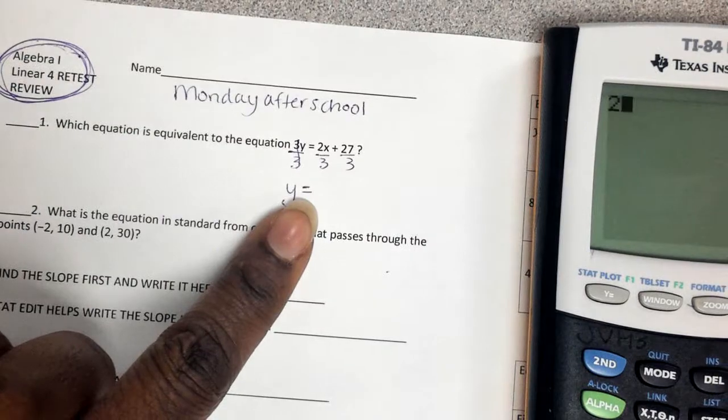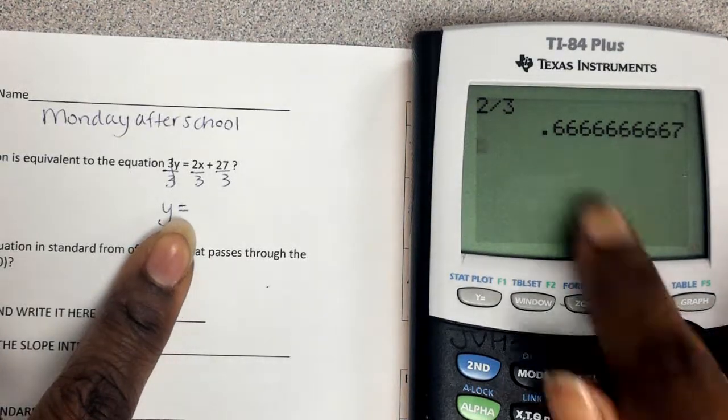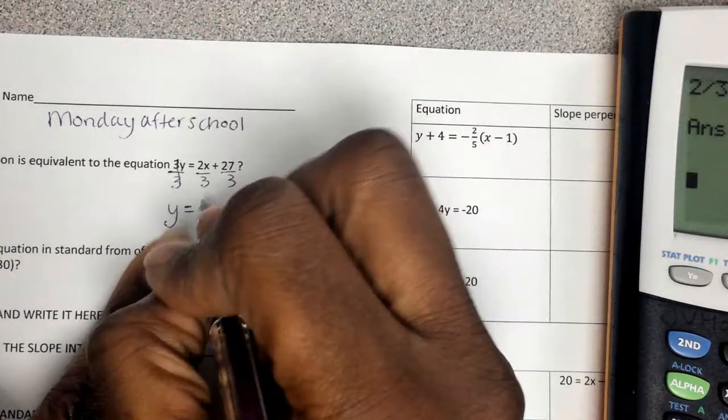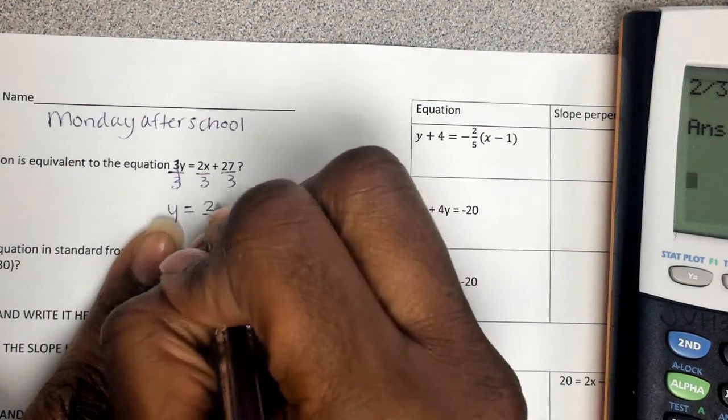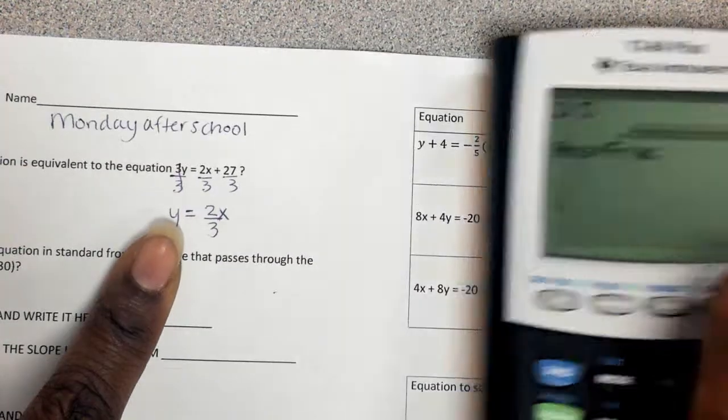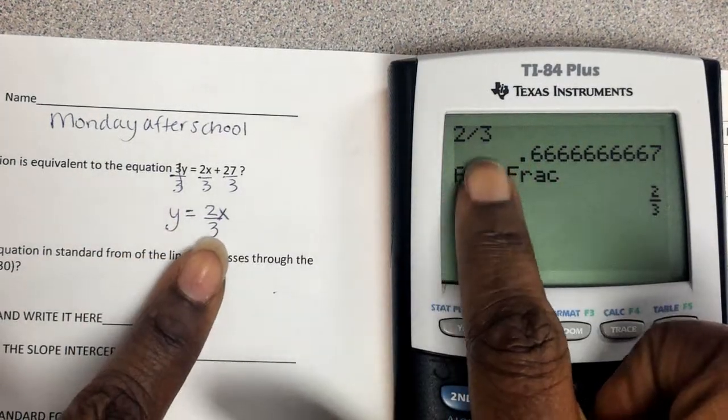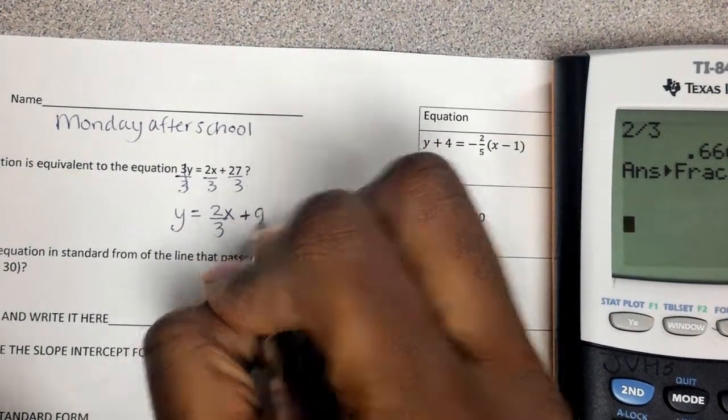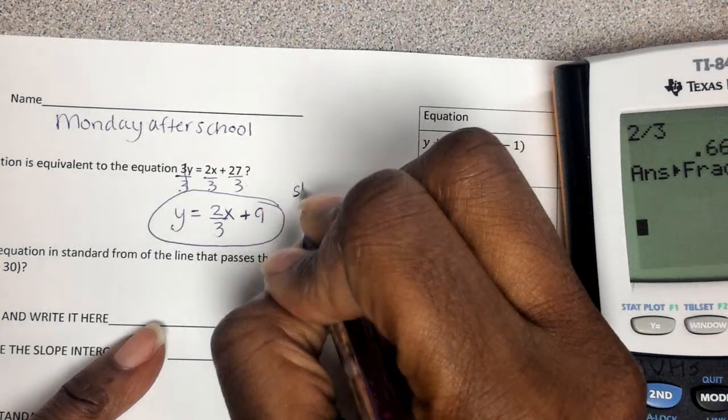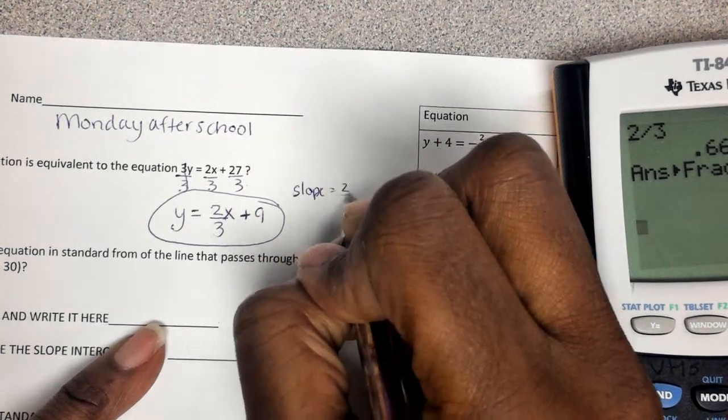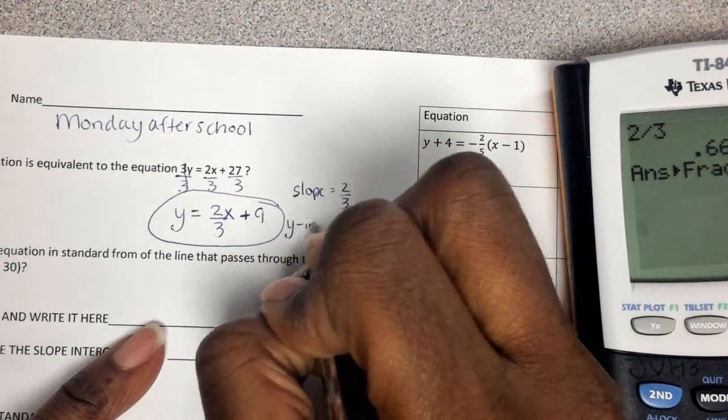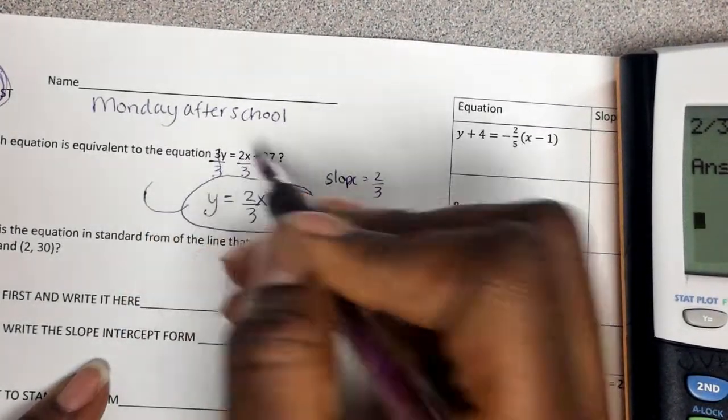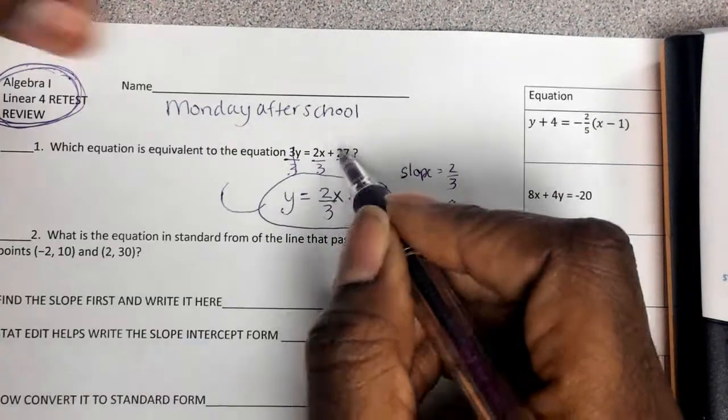2 divided by 3, it will give you a decimal. But in most cases, since it's repeating like that, we want to change it back to a fraction with math, enter, enter. So we're keeping 2 over 3 with the x. Notice I did not put the x in the calculator when I was trying to figure it out. And then 27 divided by 3 is 9. And in this case, it just tells us that my slope is 2 over 3 and my y-intercept is 9. So this is the equation that is equivalent to the beginning equation.